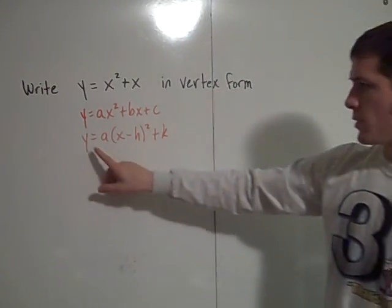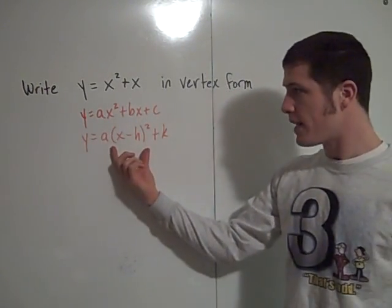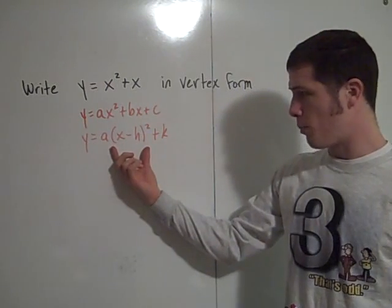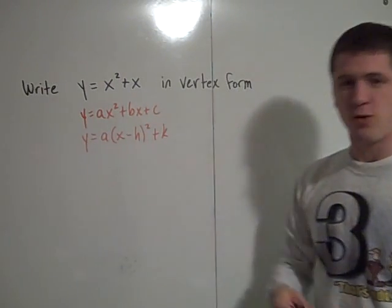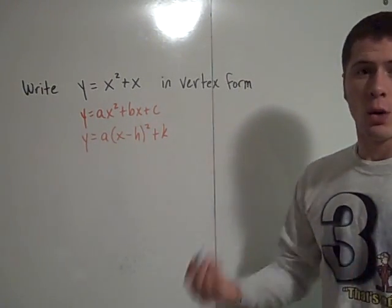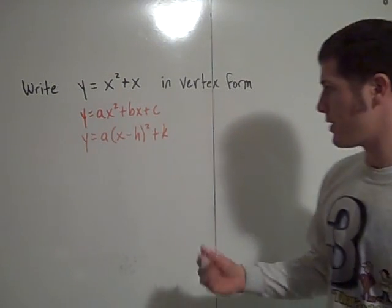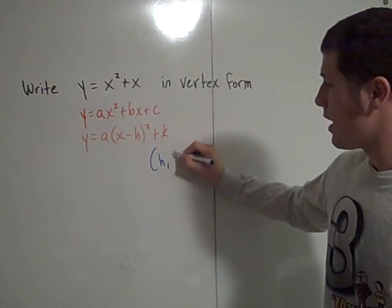We want to write it in vertex form, which is y equals a times the quantity x minus h squared plus k. And what vertex form does for you is it finds where is the vertex of the graph, and the vertex of the graph is the point (h, k).